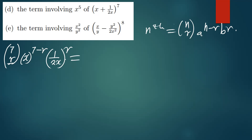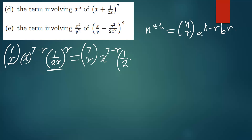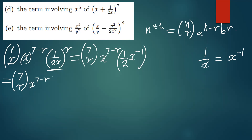Let me simplify this expression first. We have 7 choose r, then x to the power 7 minus r, and then this part can be simplified — 1 over 2 and x to the power negative 1, because 1 over x can be written as x to the power negative 1. Then I'll separate everything: 7 choose r, then x to the 7 minus r, then 1 over 2 raised to the power r, and then x to the power negative 1 raised to the power r.